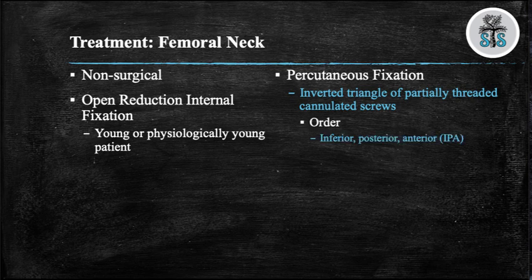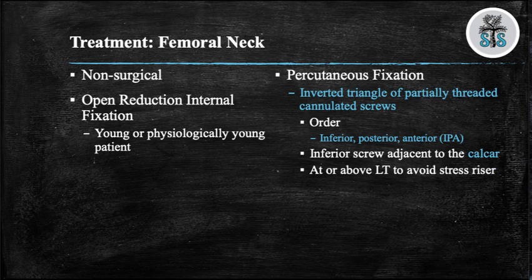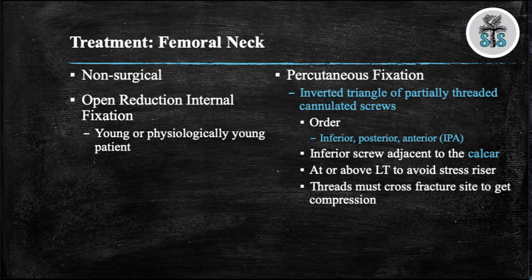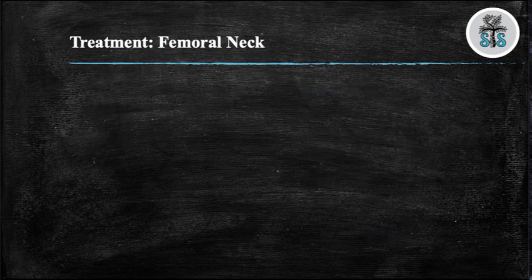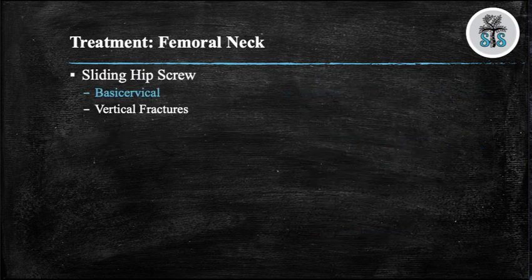The order that the screws should be placed is inferior, then posterior superior, then anterior superior — remember this with Indian Pale Ale or IPA. The most important screw is the inferior screw as it is adjacent to the calcar. You want to make sure screws are placed at or above the lesser trochanter to avoid a stress riser. Ensure the threads cross the fracture site for good compression. The most common mode of failure is varus malreduction. Sliding hip screws can be used in basicervical femoral neck fractures or fractures that are vertically oriented.